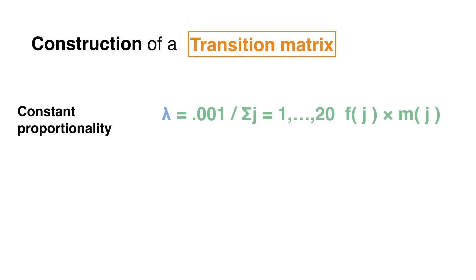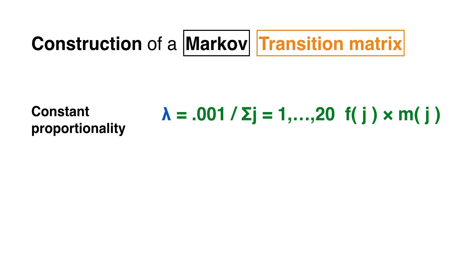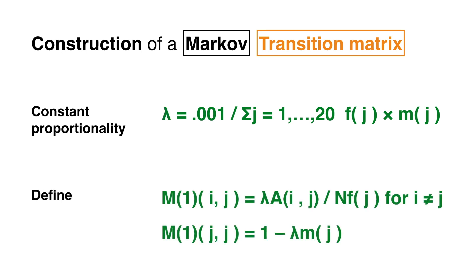A constant of proportionality is introduced in order to satisfy the requirement of Markov transition matrices that the sum of each row equals one. The entries of M1 are defined using the previous pair counts, frequencies, and mutability through these formulas.